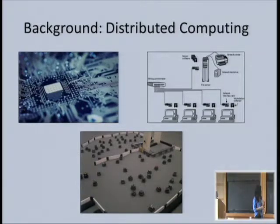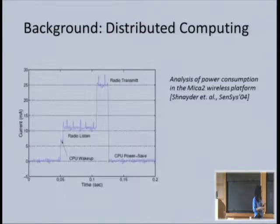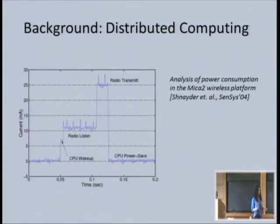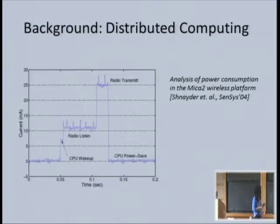For example, if you look at sensor nodes like these, this is a graph showing the power drawn by the sensor. This is what it's like when the CPU is off, which is hopefully most of the time. This is the CPU turning on. This is the radio starting to listen. And all the way up here is when the radio is transmitting. You can see that this is actually a lot more expensive than just having the CPU but not using the radio.